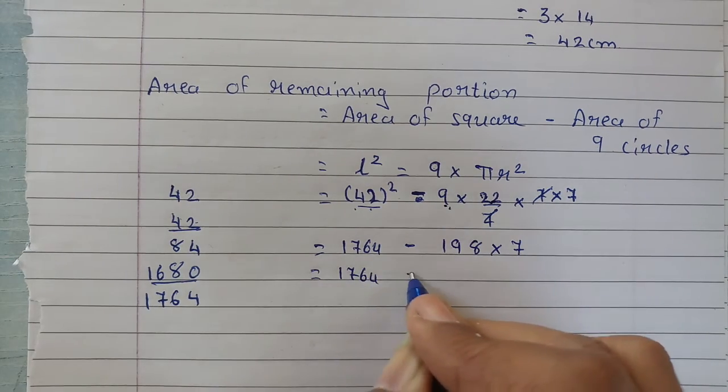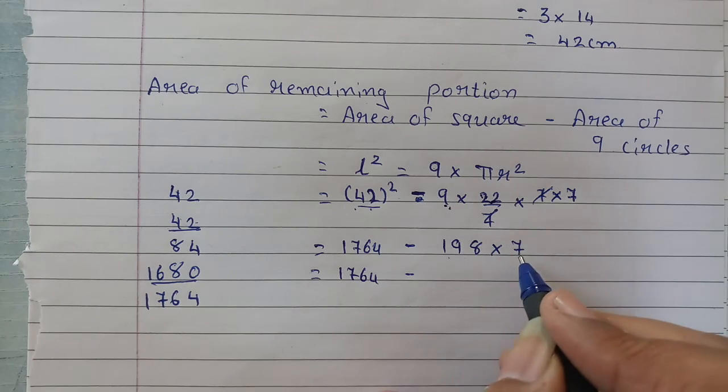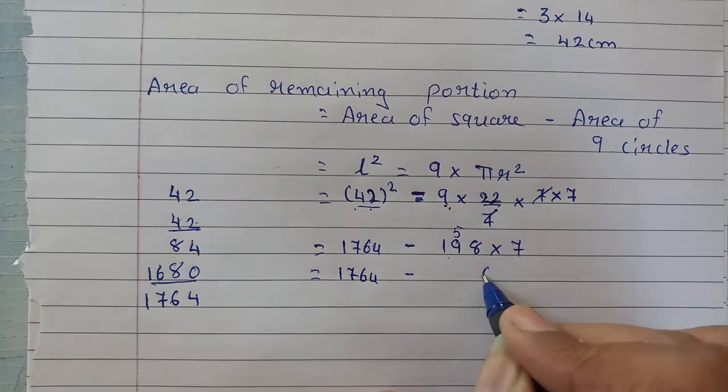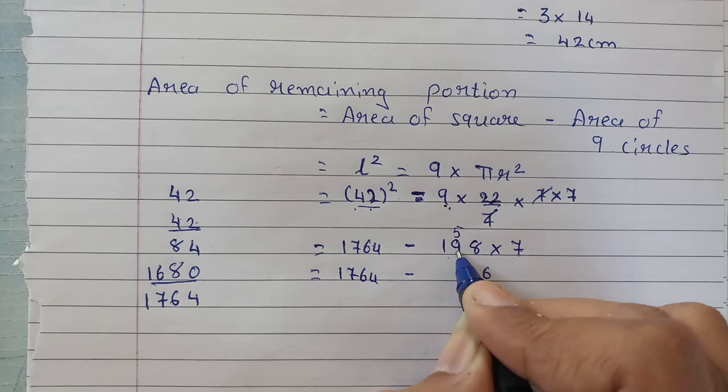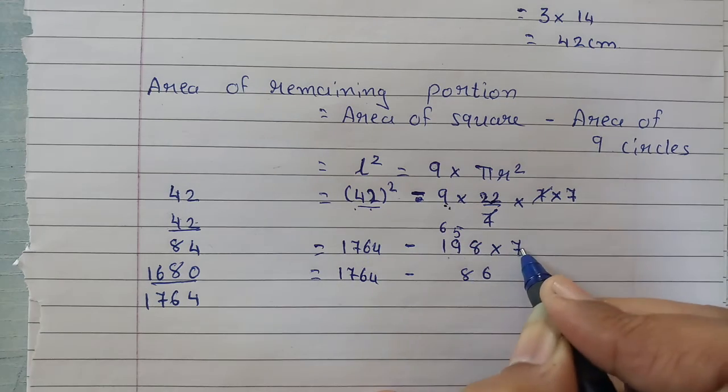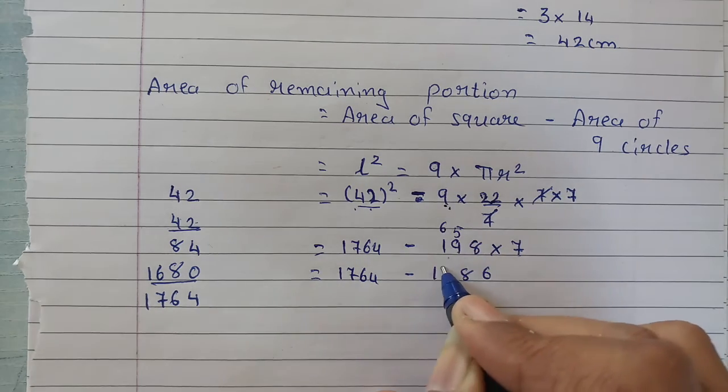So that is 1764 minus 198 into 7. 7 times 8 is 56. 7 times 9 is 63 plus 5 is 68. 7 times 1 is 7 plus 6 is 13. So we have 1386.